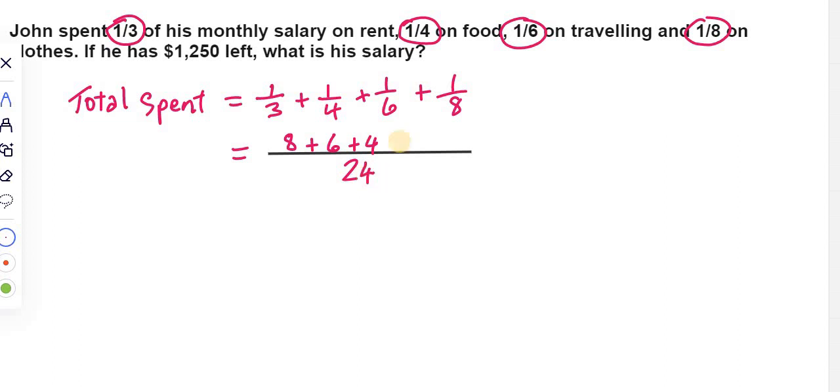Eight goes into 24 three times, and three times the numerator, one, gives us three. So when we add all of this up, we get 21 over 24. Eight plus six plus four plus three give us 21, over the denominator.